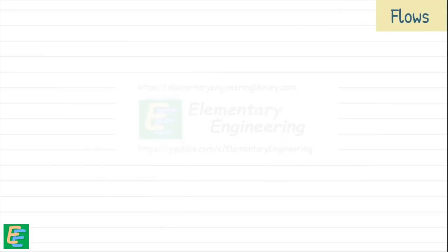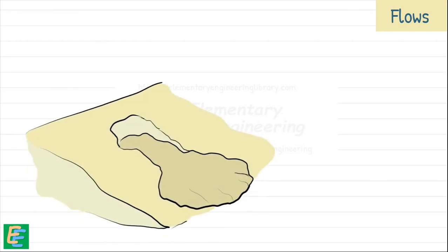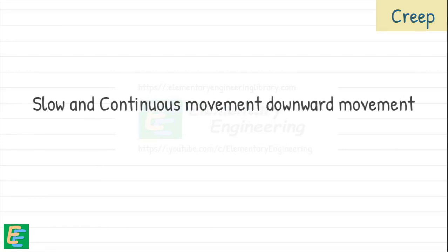Then there are flows. Flows occur when soil or debris moves downslope like a viscous fluid, often triggered by heavy rainfall or rapid snow melt, leading to a slow but continuous movement. Then there exists creep. Creep is a slow continuous downward movement of soil or rock due to gravity, happening gradually over time without a distinct failure surface.